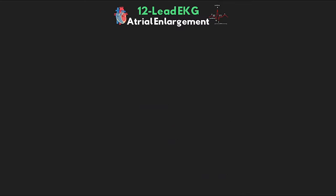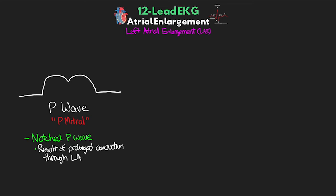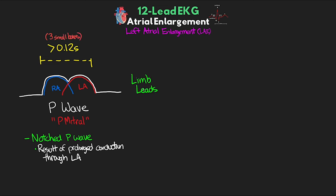Now let's talk about left atrial enlargement, or LAE. With this, we have a P-wave appearance called P-mitral — a notched P-wave that really reminds me of camel humps. This notching results from prolonged conduction time through the enlarged left atrium. Conduction begins quickly through the smaller right atrium, then begins later and conducts through the left atrium, giving us two peaks that combine to produce this appearance. Another criterion for LAE is that the P-wave is greater than 0.12 seconds, or three small boxes, best seen in limb leads one and two.